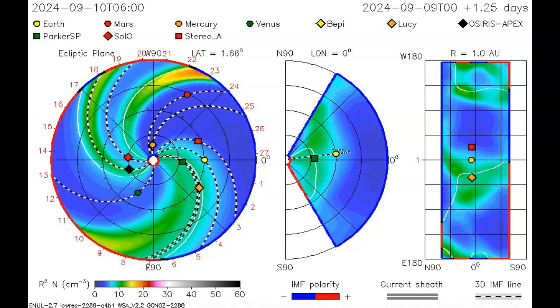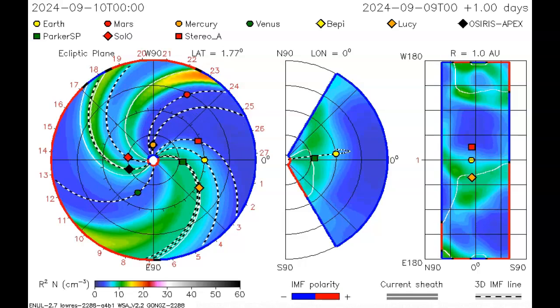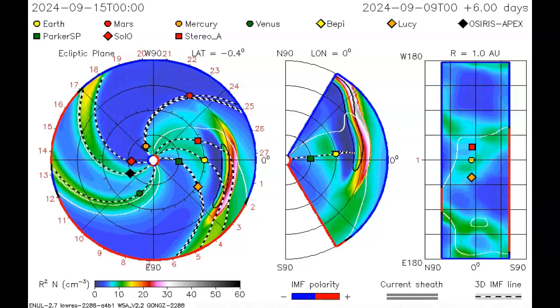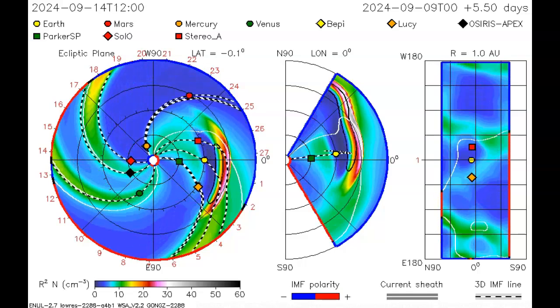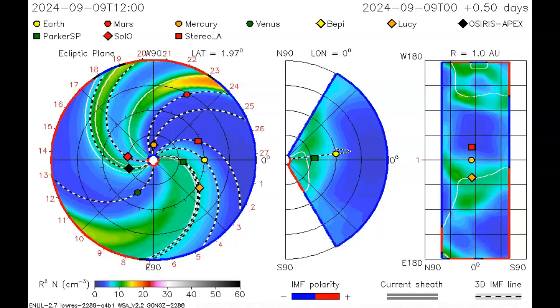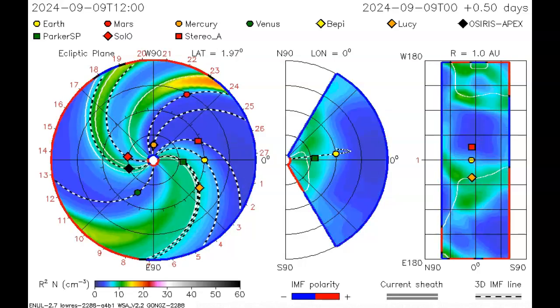It will likely hit the Parker Solar Probe spacecraft first and hit Earth along with STEREO-Ahead and Lucy all about the same time. NOAA and NASA, seen here, are both predicting the coronal mass ejection impact for late on September 12th, 2024, in just about 40 hours.